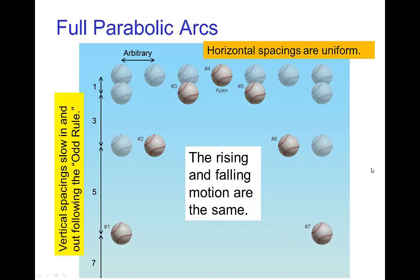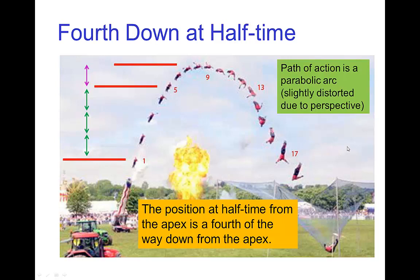Again, the slowing in and slowing out is just the same for the vertical spacings as if the ball was simply thrown straight up and falls straight back down. We can use some of the other rules like fourth down at half-time. So here we see this parabolic arc and just going from the apex, so here on frame nine, if we go four frames further, at that position it's a fourth of the way down compared to going four more frames to seventeen. So again, this frame here is a fourth of the way down from the apex, this frame to this frame.